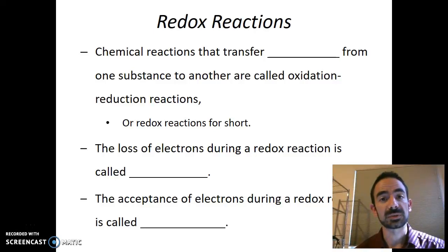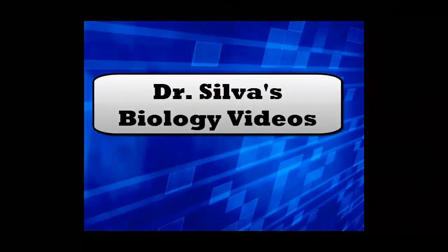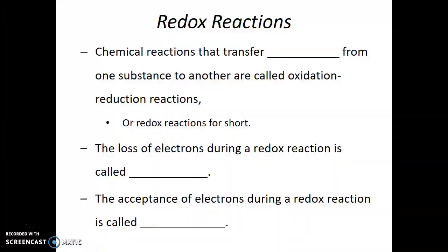In this video we're going to talk about redox reactions and start looking into the specifics of the light reactions of photosynthesis. As a metabolic pathway, both photosynthesis and cellular respiration involve many redox reactions. Chemical reactions which transfer electrons from one substance to another are called oxidation-reduction reactions, or redox reactions for short.